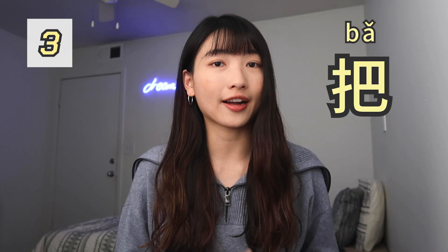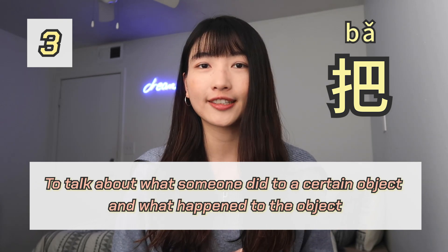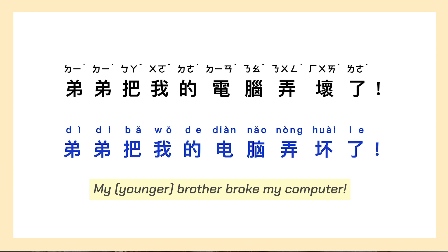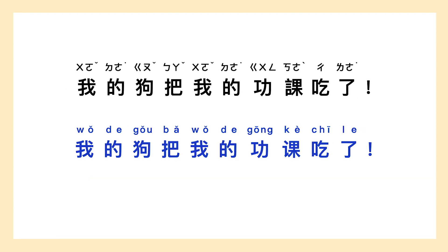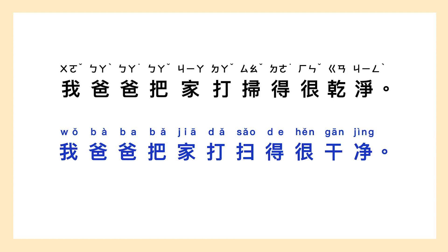In addition, we use the 把 construction to talk about what someone did to a certain object and what happened to the object. For example: 弟弟把我的电脑弄坏了。 — My brother broke my computer. 我的狗把我的功课吃了。 — My dog ate my homework. 我爸爸把家打扫得很干净。 — My dad made the house very clean.